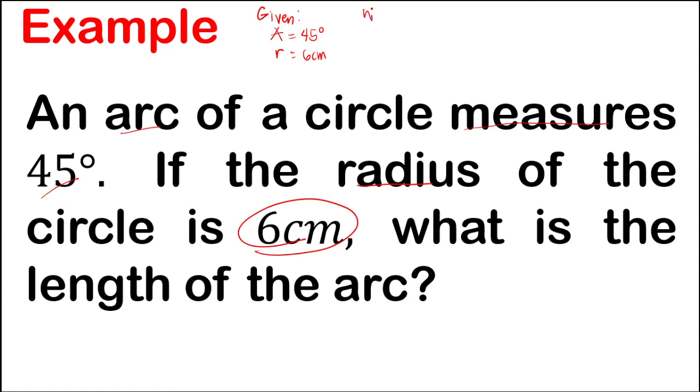Now, our working equation. Working equation will be A over 360 is equal to the arc length over 2 pi R.